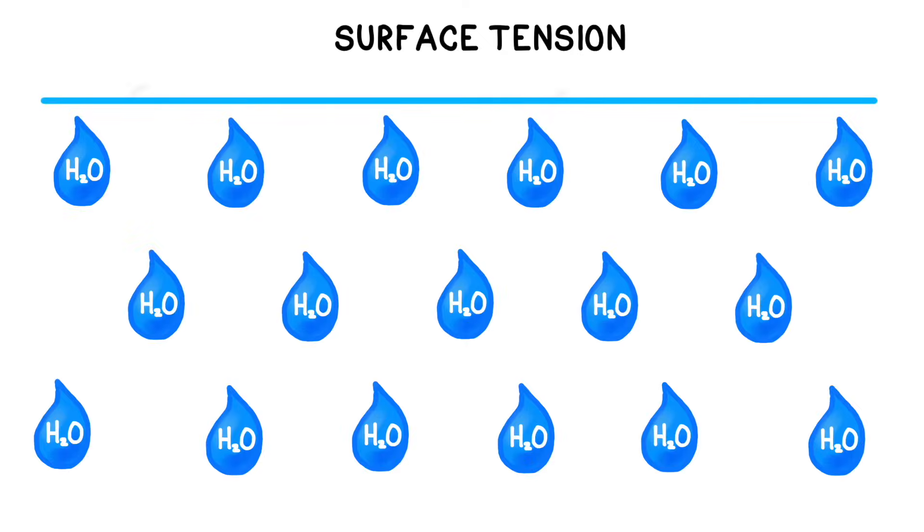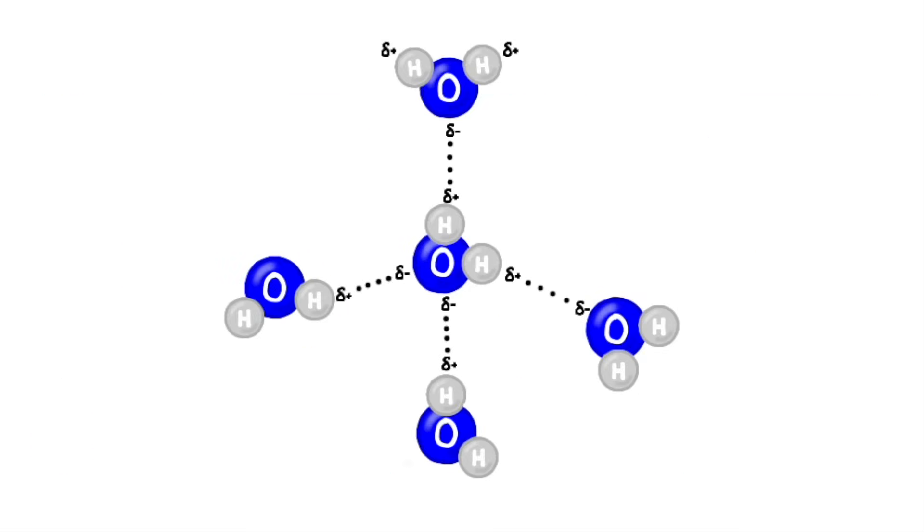Surface tension is closely related to cohesion. Usually, each water molecule is bonded to four other water molecules most of the time in a tetrahedral shape, and the force is the same in all directions.